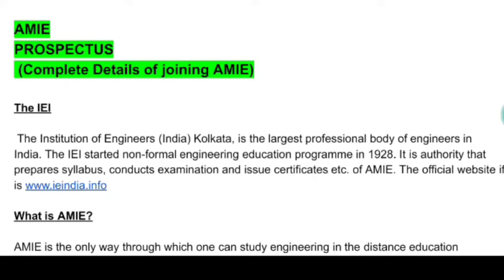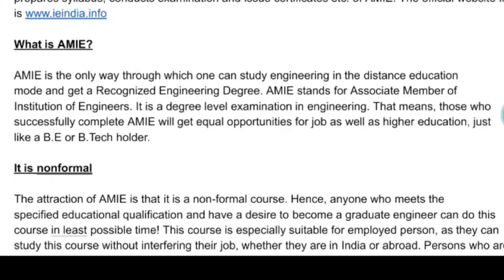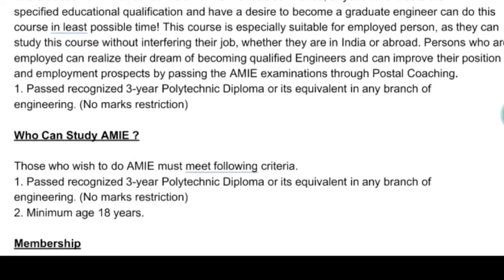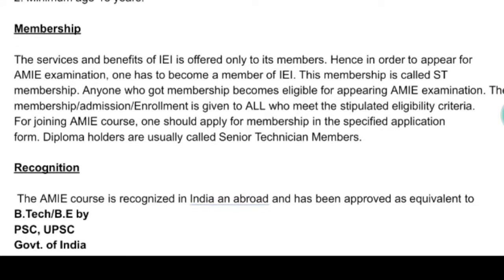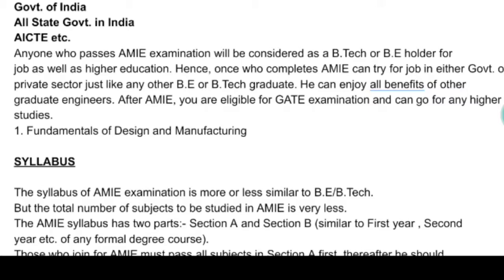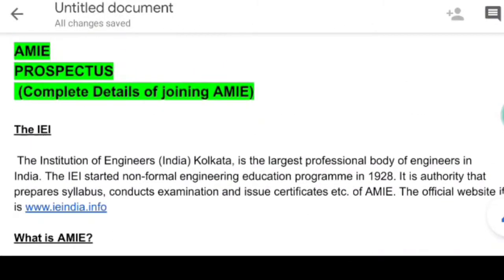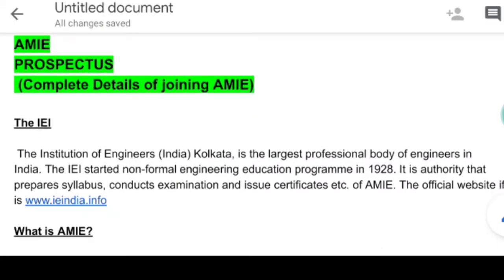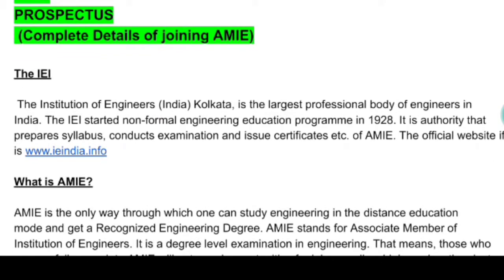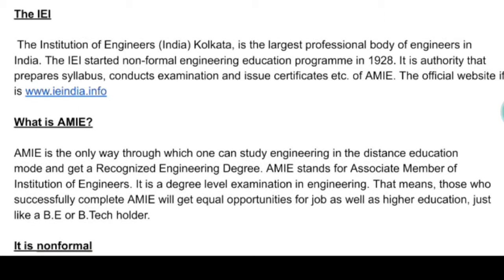Through this video we will discuss in detail about AMI: what is IEI, what is AMI, who are the students that can enroll, the procedure to get membership, the recognition of AMI, and the syllabus depending on different branches. IEI stands for Institute of Engineers India. The head office is located at Kolkata. It is the largest professional body of engineers in India. IEI started non-formal engineering education in 1928 and its official website is ieiiindia.info.